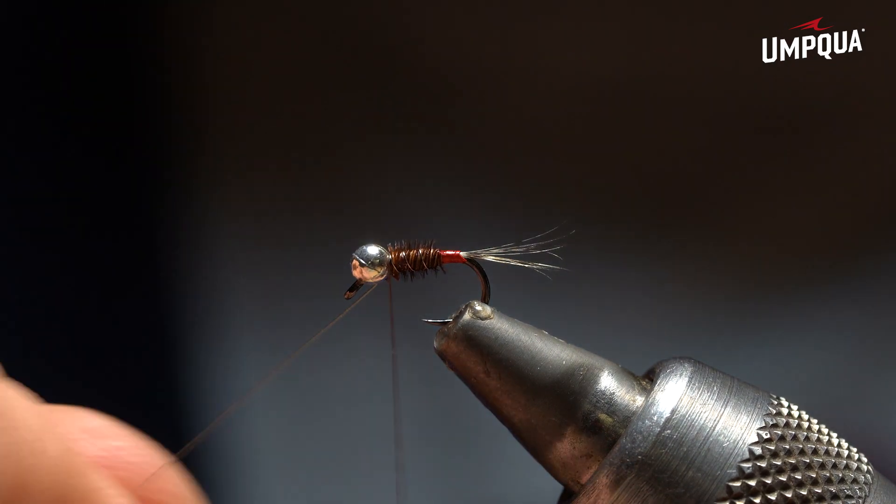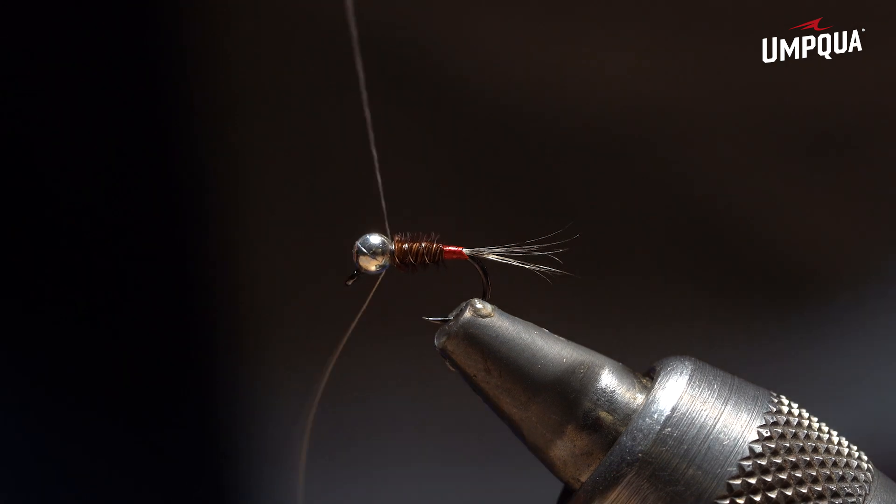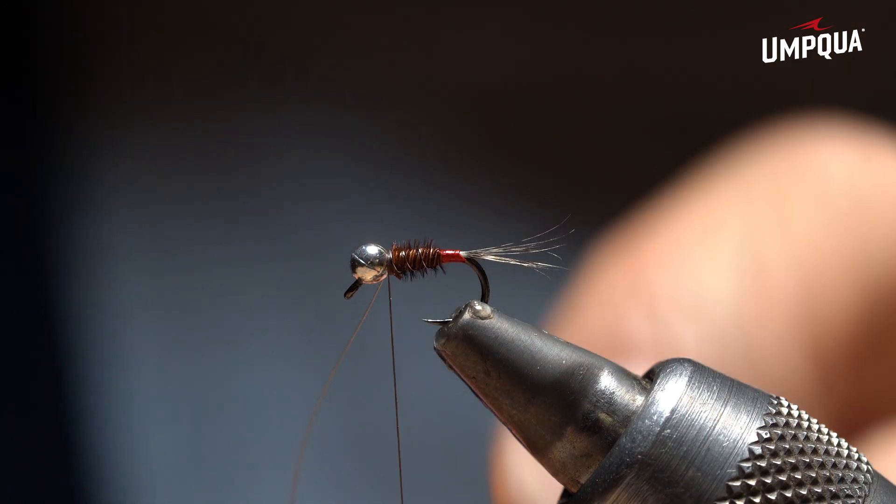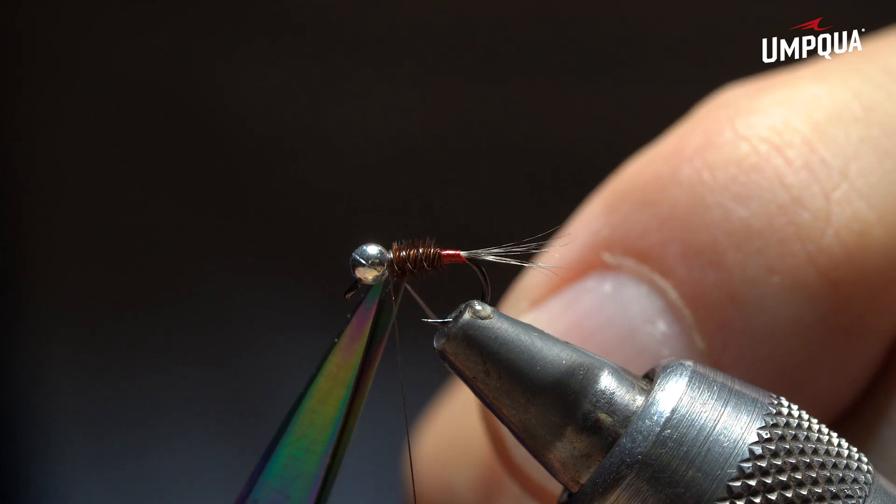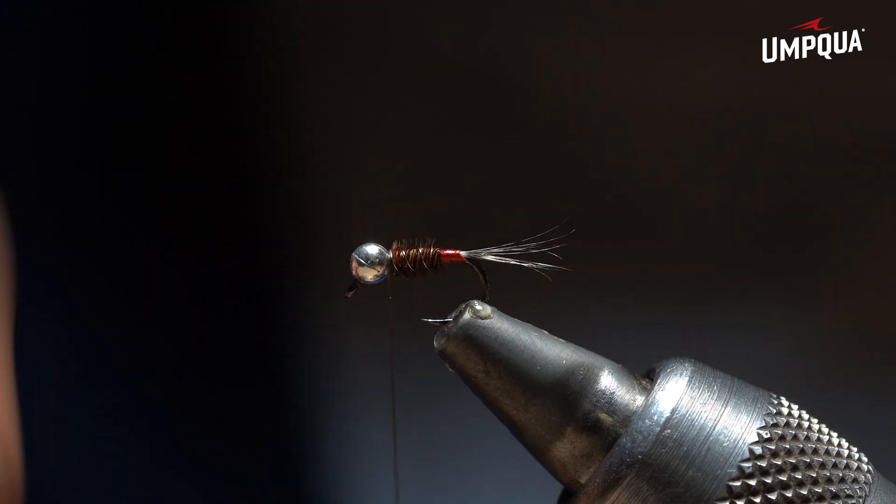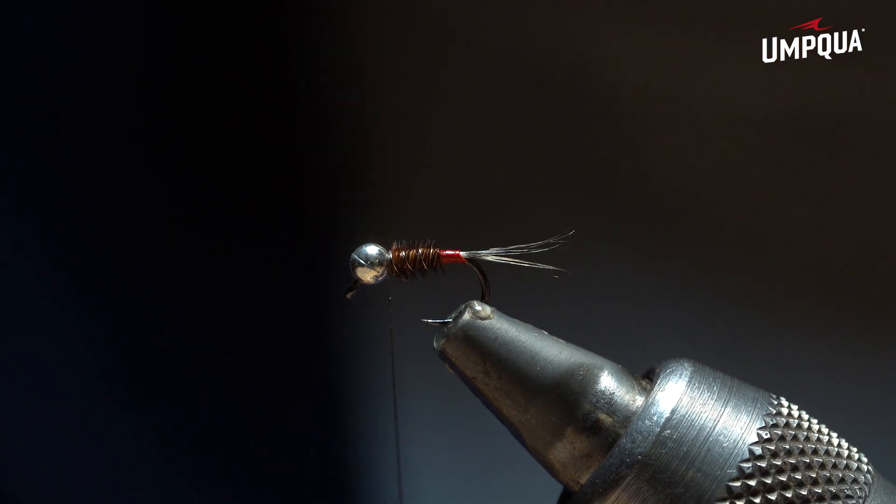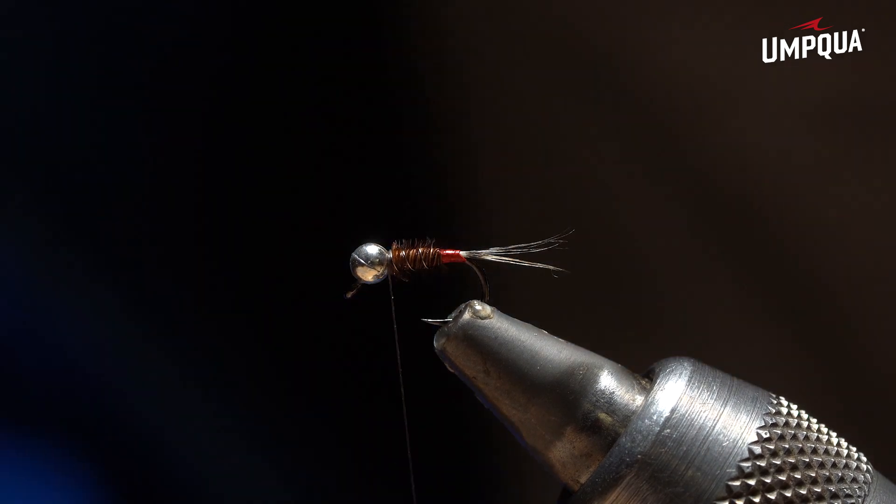The reason I tie this fly on a jig hook is that these small little pheasant tails on shallow and slow water can be very effective.